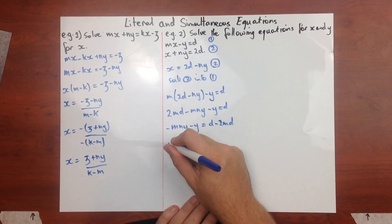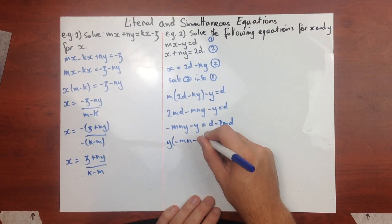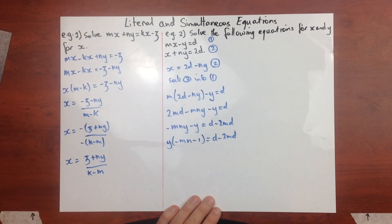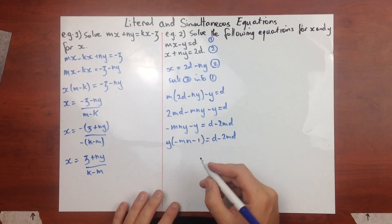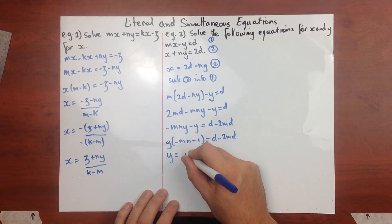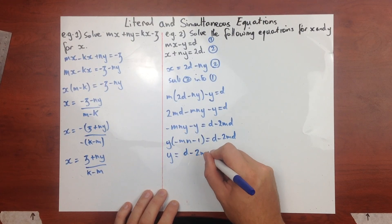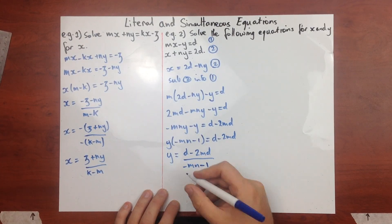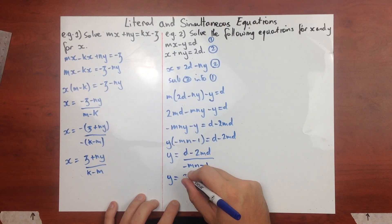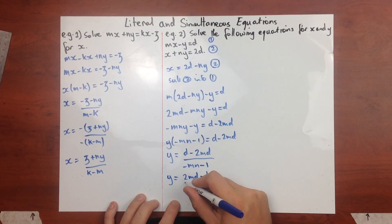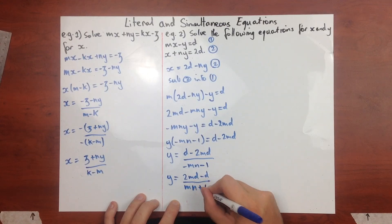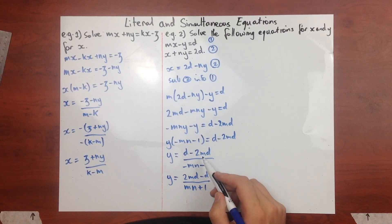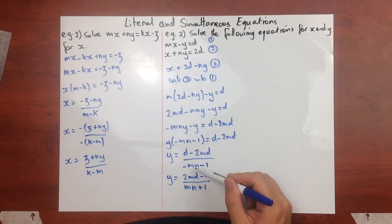Taking y out as a common factor gives y times (negative mn minus 1) equals d minus 2md. Dividing both sides and neatening up by taking out a negative from both numerator and denominator, we get y equals (2md minus d) over (mn plus 1).